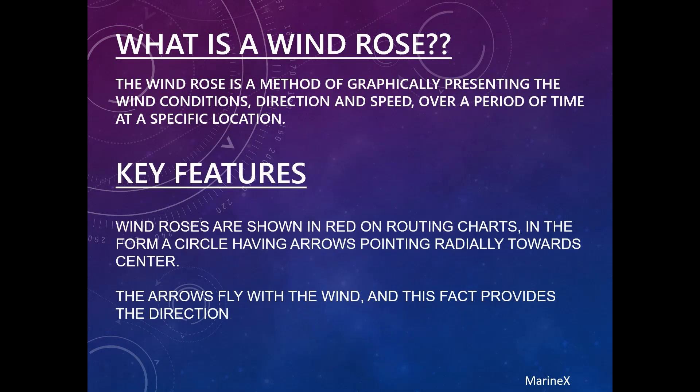So what exactly is a wind rose? The wind rose is a method of graphically presenting the wind conditions, direction and speed over a period of time at a specific location. This means that wind rose is a graphical method by which we can represent wind direction, its speed and other conditions for a fixed period of time for a specific location.